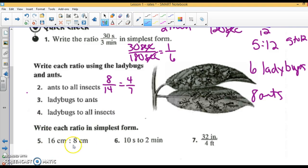Ladybugs to ants - so ladybugs is 6, ants is 8, which reduces to 3/4. Ladybugs to all insects - so ladybugs is 6 to all insects is 14. That's 3/7.